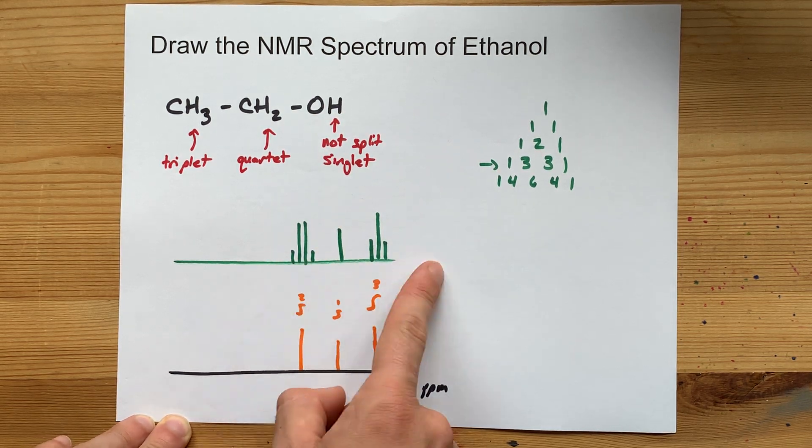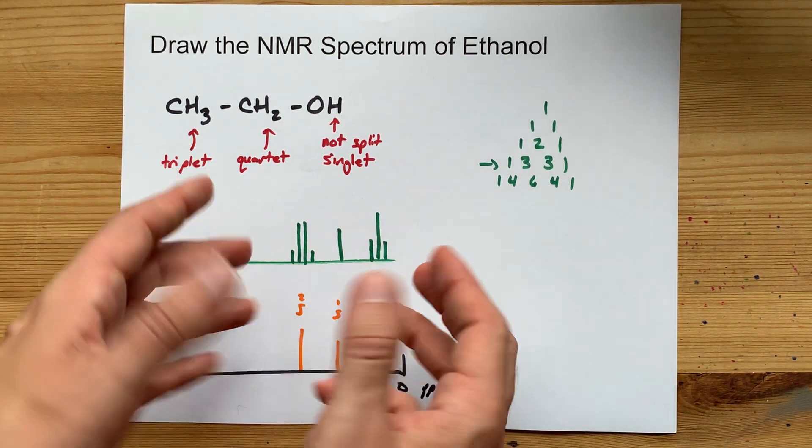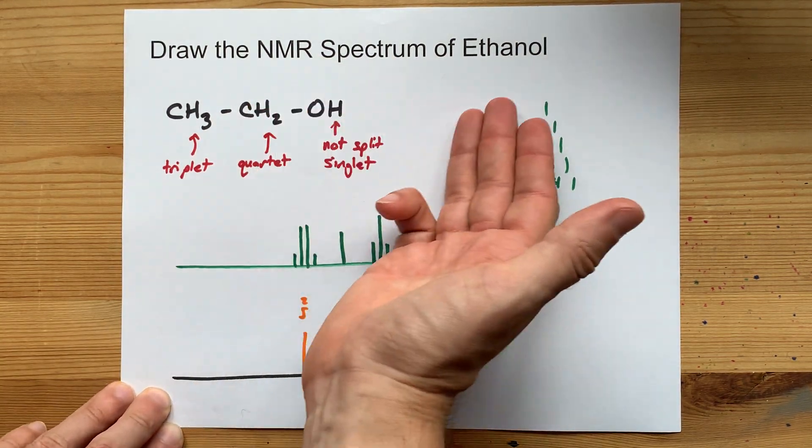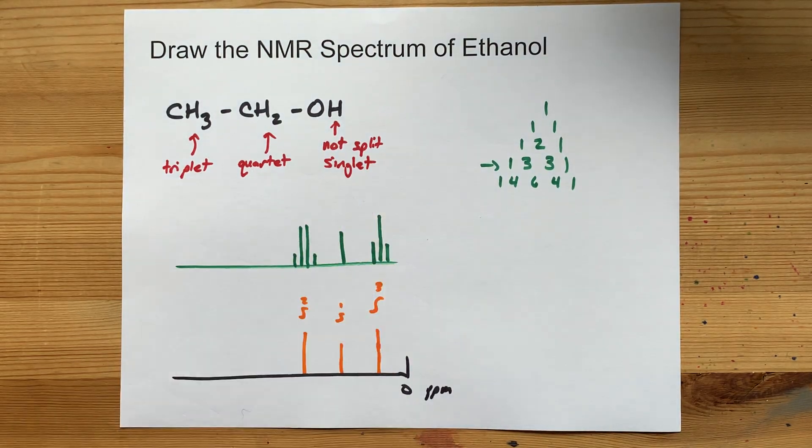Again, most textbooks say it could be anywhere from 1 to 5, and it's not your job to know where it is for ethanol specifically. There you go, NMR ethanol. You're welcome. Best of luck.